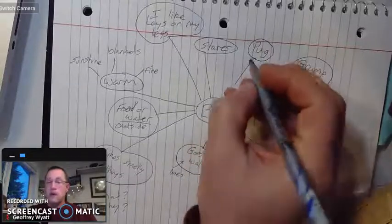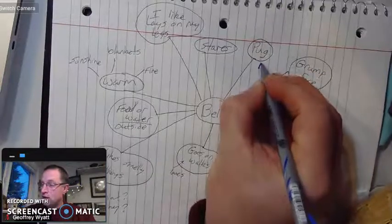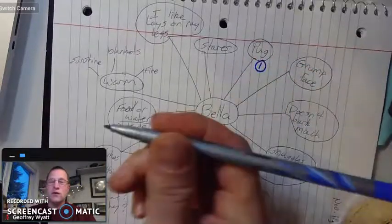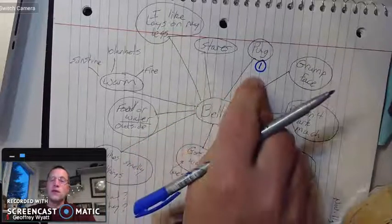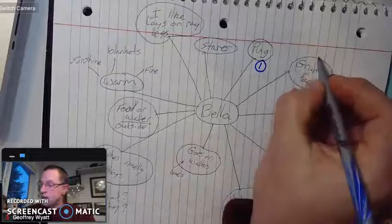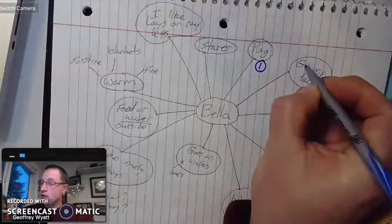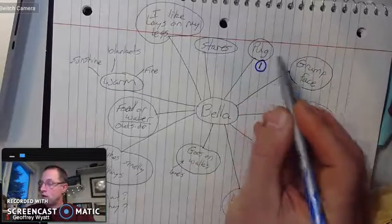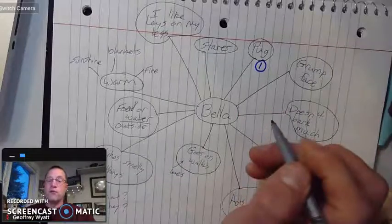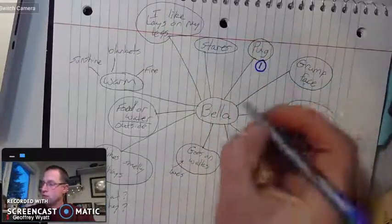So I'm going to just put a 1 by the fact that she's a pug, and I'm going to circle that. I'm also using a different colored pen because I want it to really stand out. The next thing is that she's got a grumpy face. Now I think I'll probably do a sentence like, I have a pug, and she has a grumpy face. Or maybe I'll do, Bella is a pug. Yeah, that might be a better thing.